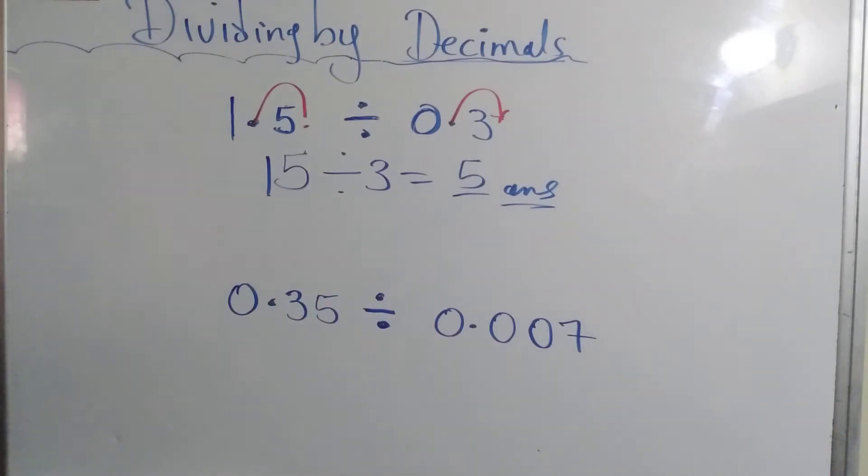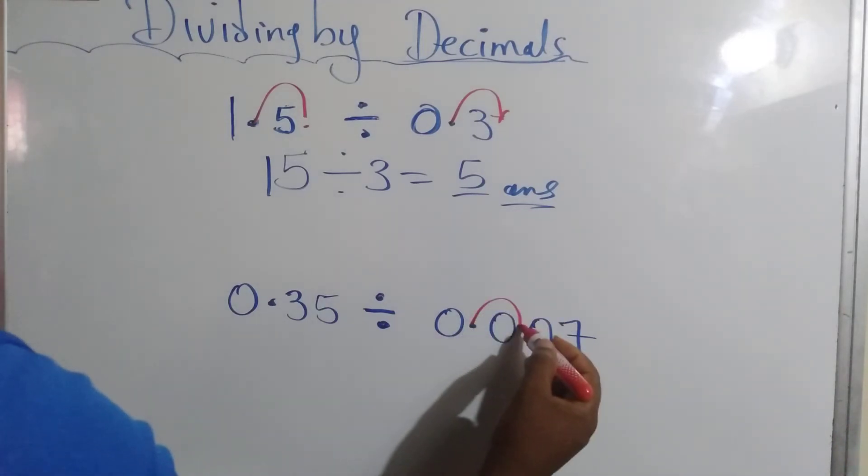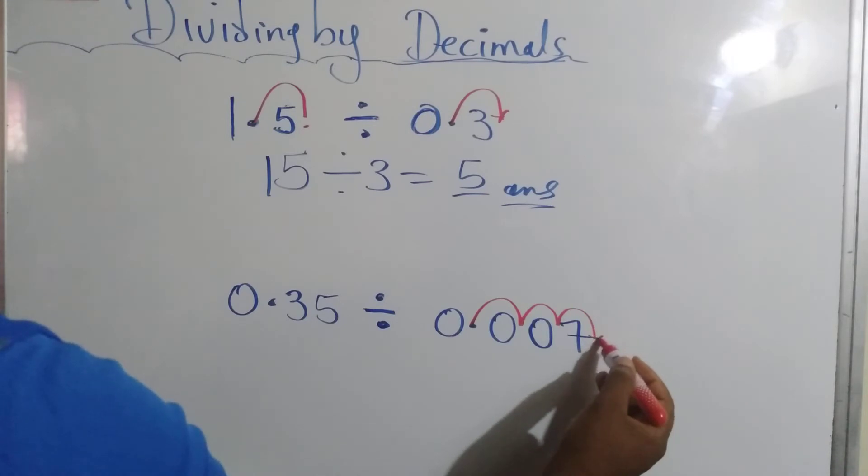So let's go. We're going to do the same thing. We convert this to a whole number. So we're going to do it to 7. So 1, 2, 3. So move three places.